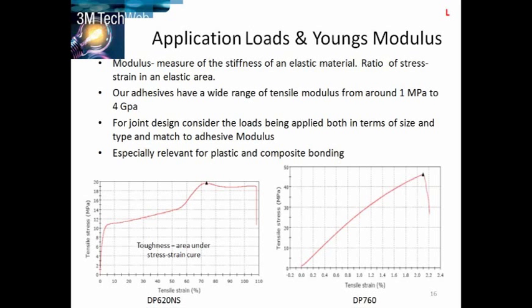Looking at these adhesives: the EP760 on the right has a failure strain of around 2% — when 2% strain is reached the joint fails — but it's very high strength, well over 40 MPa. On the left we have the EP620, which is an excellent two-part PU adhesive. It has very different stress-strain characteristics — it actually fails above 100% elongation. So if you need large flexibility in joint design, this is an excellent product. The strength is not as high, but 20 MPa is still quite strong.